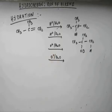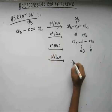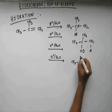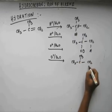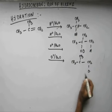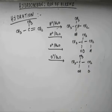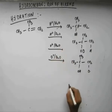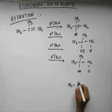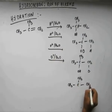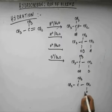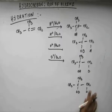In the third case we don't have H+, we have D+. So D+ will come and initiate the reaction. D will get attached to the outer carbon, and OH will come and get attached to the internal carbon because we have H2O. In the last case we have D+ and D2O, so D will come and initiate the reaction, get attached to the outer carbon, and OD will get attached to the internal carbon.